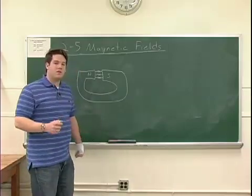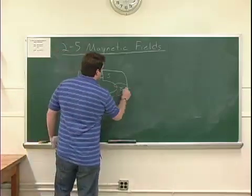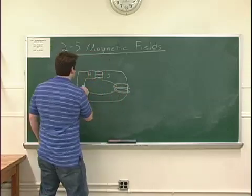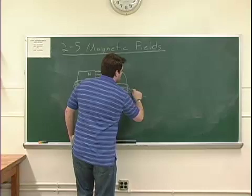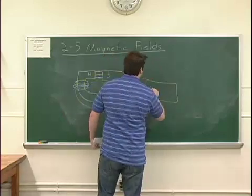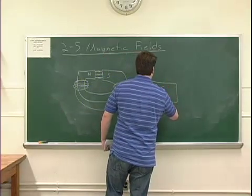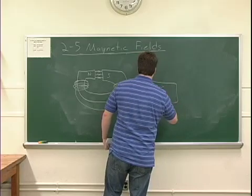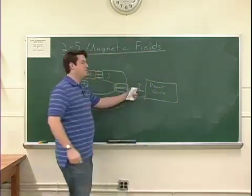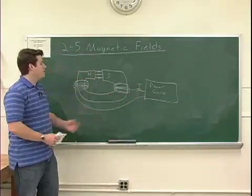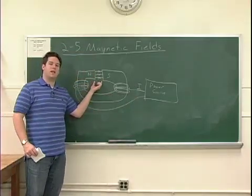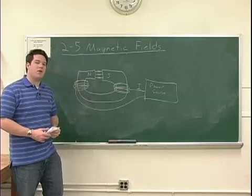In order to change the strength of this field, there will be some coils of wire around the iron that makes up the magnet and we can control this using a power source. By changing the current that flows through the coils around the magnet, big I, we can change the strength of the field in this gap. It's this field that we're going to try to measure.